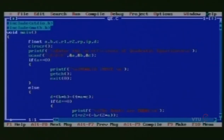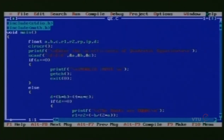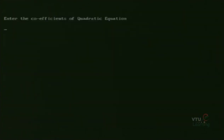Now let us compile this program. To compile the program, we use the command Alt+F9. After compilation, we execute the program to check the output using the command Ctrl+F9. Afterwards, we enter the coefficients of the quadratic equation. The values I am entering here are 0, 1, and 2 for variables a, b, and c.